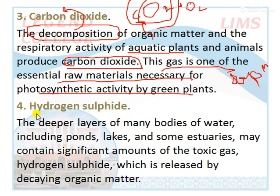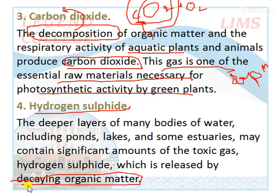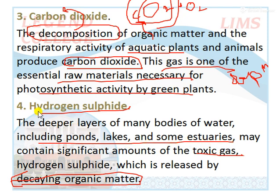Next we have hydrogen sulfide, which is a toxic gas. It is produced or released from decaying organic matter in environments including ponds, lakes, and estuaries. The essential gases dissolved in aquatic environments are mainly carbon dioxide, oxygen, and nitrogen, which dissolve readily in water. These are the physical and chemical properties of water which we have mainly discussed today.